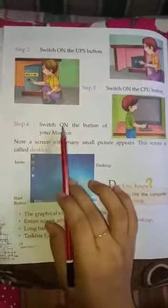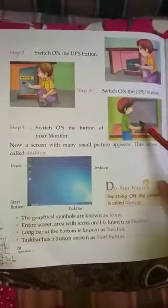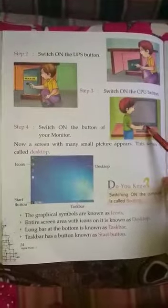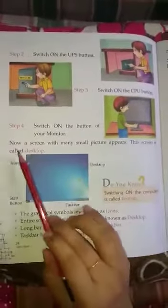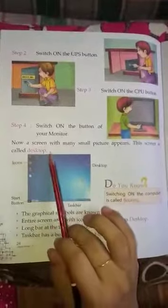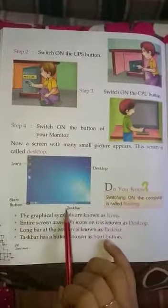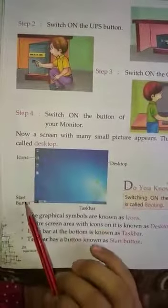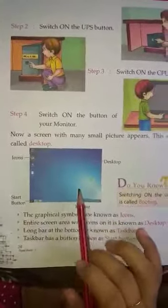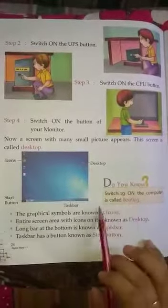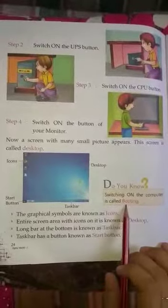Step 4: switch on the button of your monitor۔ جب ہماری screen ہے، وہاں ایک button ہے، ہم اپنے monitor کو switch on کریں گے۔ اس کے بعد screen پر many small pictures appear ہوں گی — this screen is called desktop۔ آپ یہاں دیکھ سکتے ہیں icons، start button، task bar — یہ سب desktop پر show ہو جائیں گی۔